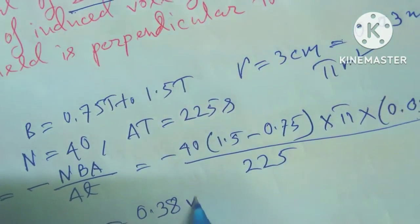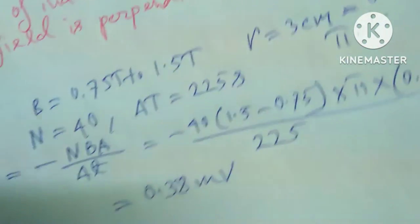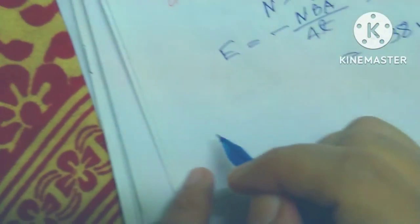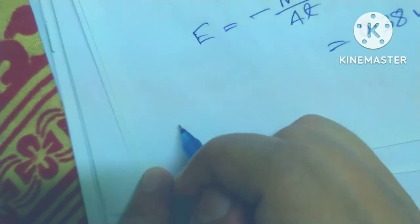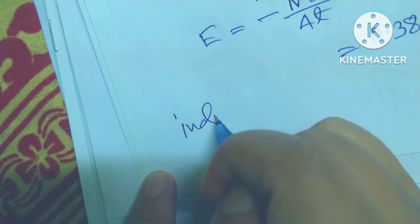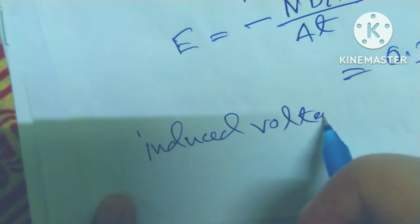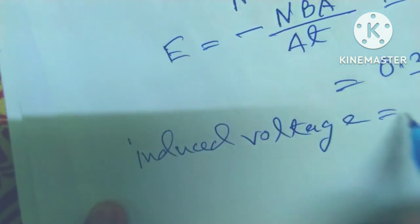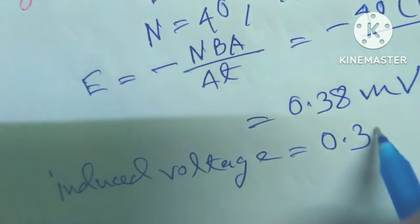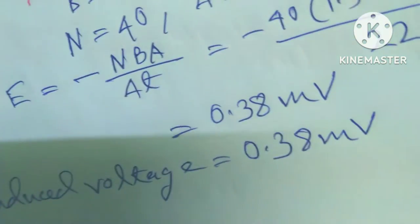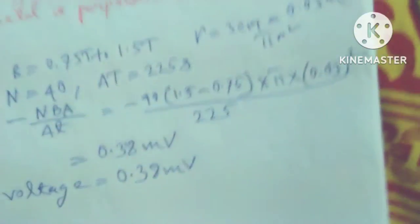And the answer is 0.38 millivolts. So the magnetic induced voltage equals to 0.38 millivolts. Thanks for watching. I hope I can clear the total solution. Please check my note.